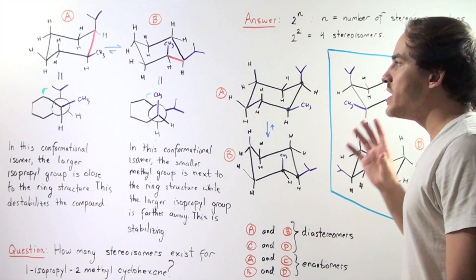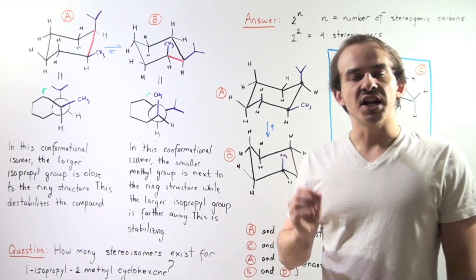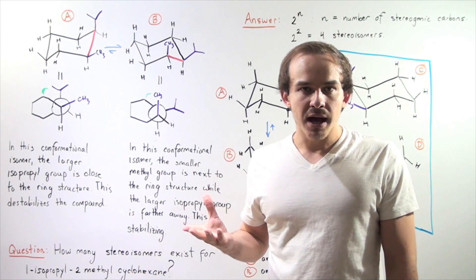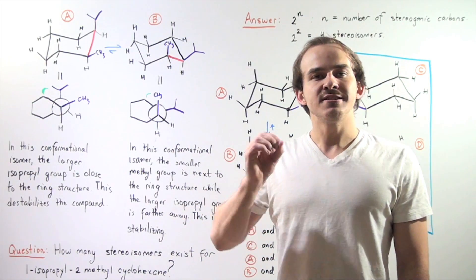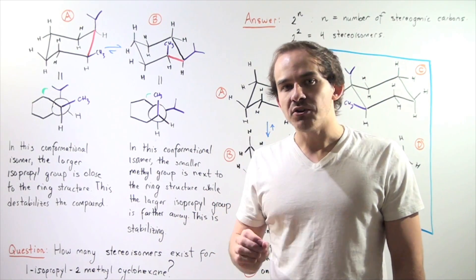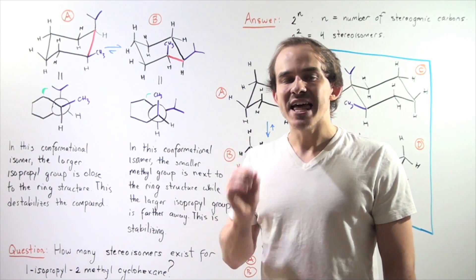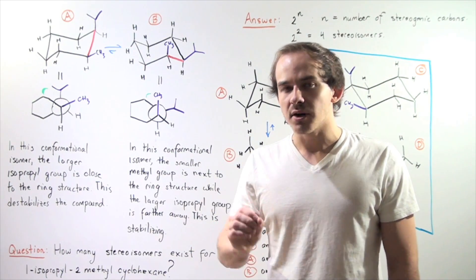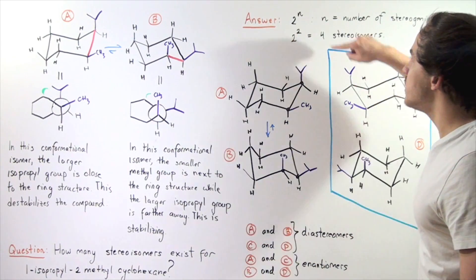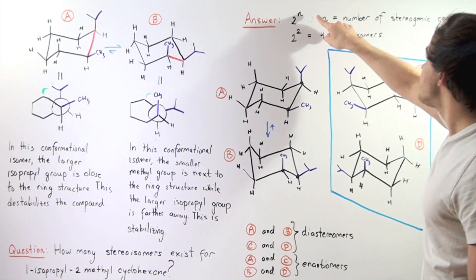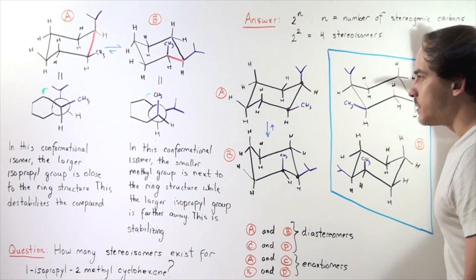To conclude: whenever you're trying to determine the number of stereoisomers in a compound, the first step is to find the number of stereogenic carbons. Then, to find the maximum number of stereoisomers, you simply use the formula 2 to the N, where N is the number of stereogenic carbons.